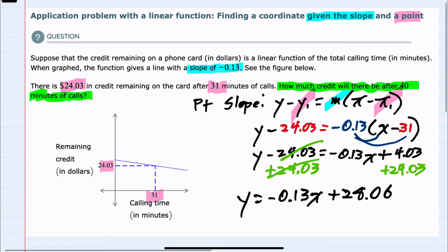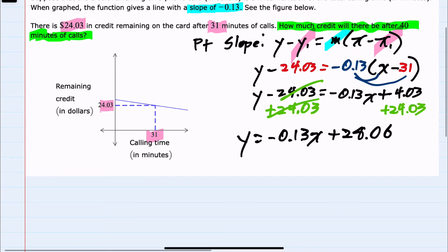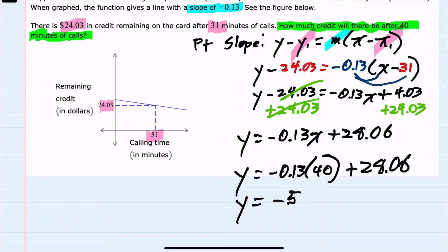So the amount on the card y after 40 minutes will be negative 0.13 times 40 plus our 28.06. Doing the multiplication here, negative 0.13 times 40 is a negative 5.2.